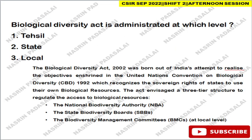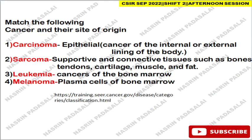The Biodiversity Act is administered at which level — state or local level? The correct answer is local level. The Biological Diversity Act was enacted in India in 2002, following the UN Convention on Biological Diversity of 1992. The Act emphasizes a three-tier structure: first, the National Biodiversity Authority; second, the State Biodiversity Board; and third, Biodiversity Management Committees at the local level. So the correct option is local level.